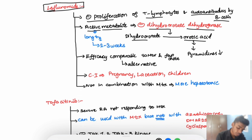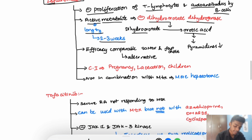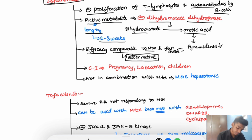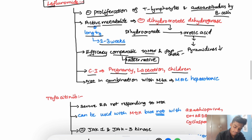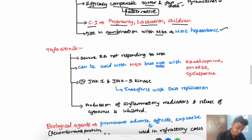This active metabolite has a long half-life of around 2 to 3 weeks. Its efficacy is comparable to methotrexate and it has a fast onset, so it is used as an alternative to methotrexate. It is contraindicated in pregnancy, lactation, and in children. It should not be given in combination with methotrexate because both can cause hepatotoxicity.